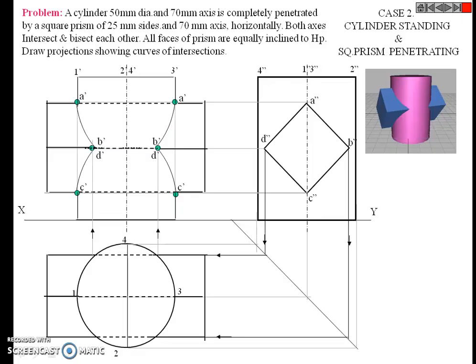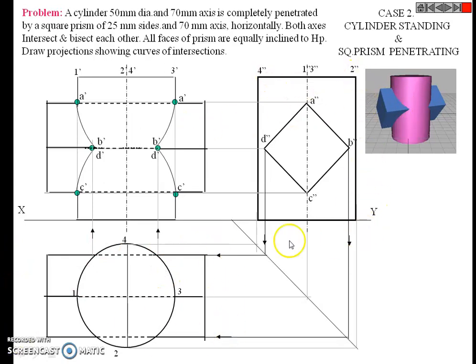So this is the complete solution of this problem. If you see the 3D figure from the front side you get the front view; from the top side you get the top view; and from the side you get the side view. This is the complete case — the side view, top view, and front view of this composite object.